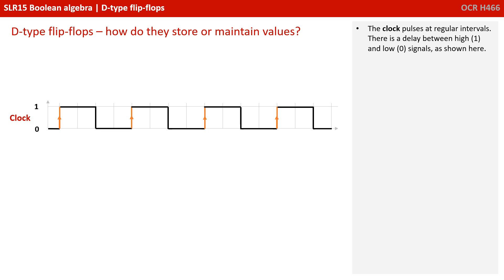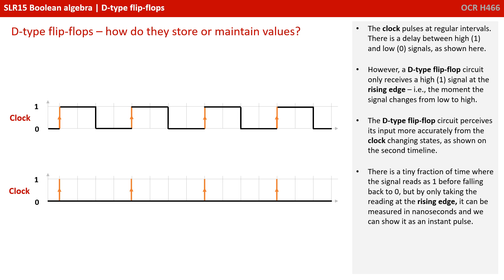The clock pulses at regular intervals, and there is obviously a delay between a high 1 and a low 0 signal, as shown here. However, a D-type flip-flop circuit only receives a high 1 signal at the rising edge, i.e. the very moment the signal changes from low to high. The D-type flip-flop circuit perceives its input more accurately from the clock changing states, as shown in the second timeline.